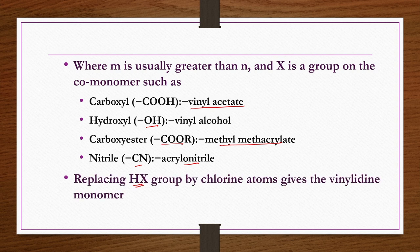X is a group on the co-monomer: if it is carboxyl, you get vinyl acetate; if it is hydroxyl, you get vinyl alcohol; if it is carboxyester, you get methyl methacrylate polymers; if it is nitrile, you produce acrylonitrile. Replacing the HX group with chlorine atoms gives the vinylidene monomer.